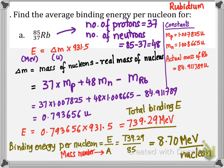We get 8.7 MeV per nucleon. In the exam, if you use the formula E equals delta m multiplied by 931.5, do not forget to also write the basic formula: E equals delta m times c squared. There are marks allotted for that basic formula, so always include it.